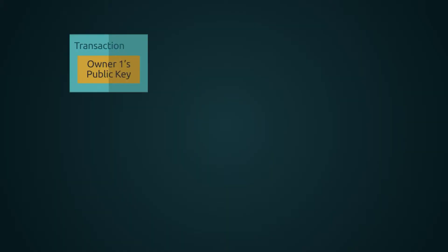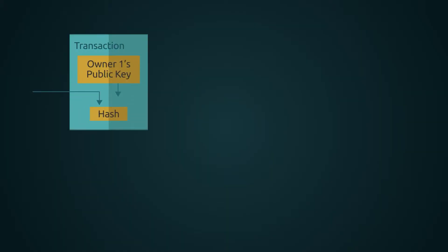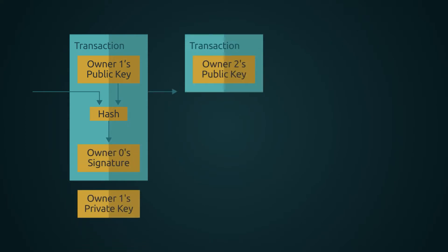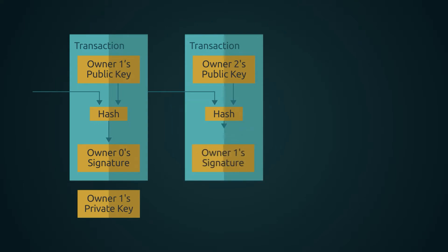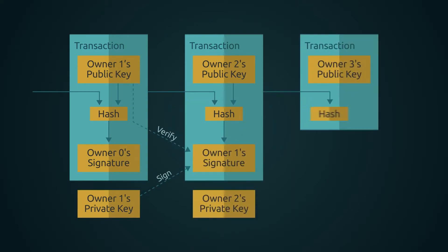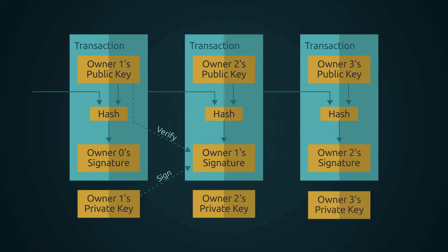We define an electronic coin as a chain of digital signatures. Each owner transfers the coin to the next by digitally signing a hash of the previous transaction and the public key of the next owner, and adding these to the end of the coin. A payee can verify the signatures to verify the chain of ownership.